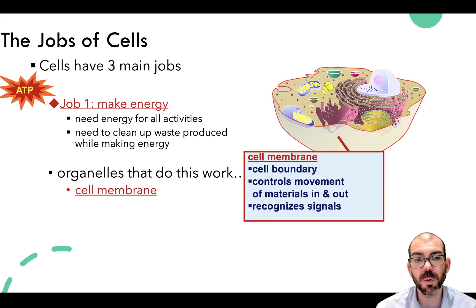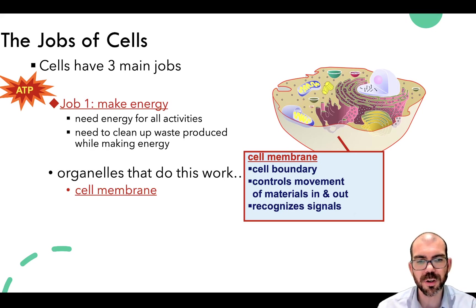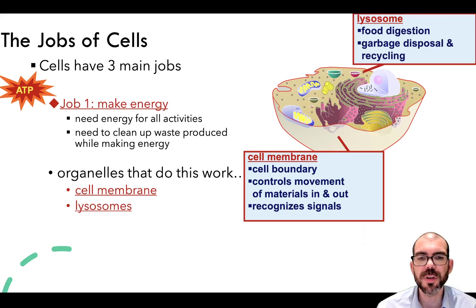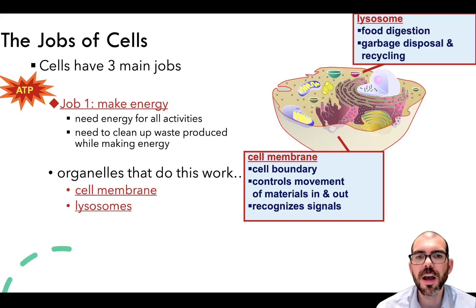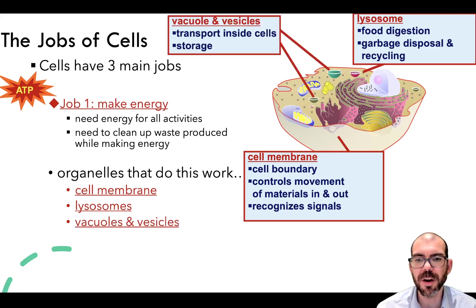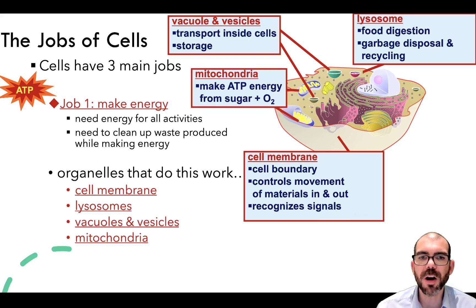The organelles that did this work were the cell membrane — the boundary that controlled what entered and exited the cell — lysosomes, which are hydrolytic enzyme-containing vacuoles able to digest materials the cell needs to break down, vacuoles and vesicles which stored and shipped materials around the cell, and the mitochondria, which made ATP energy from sugar in the presence of oxygen.